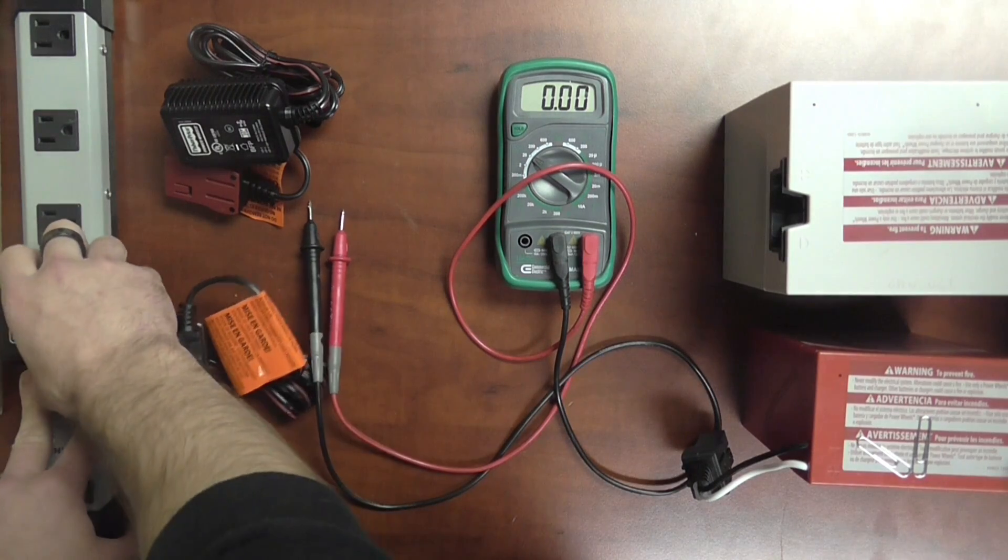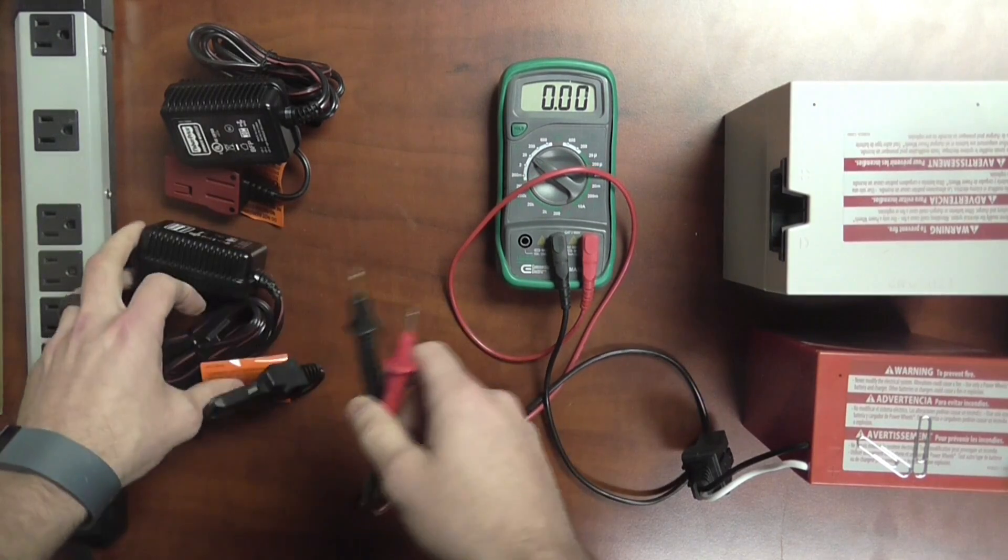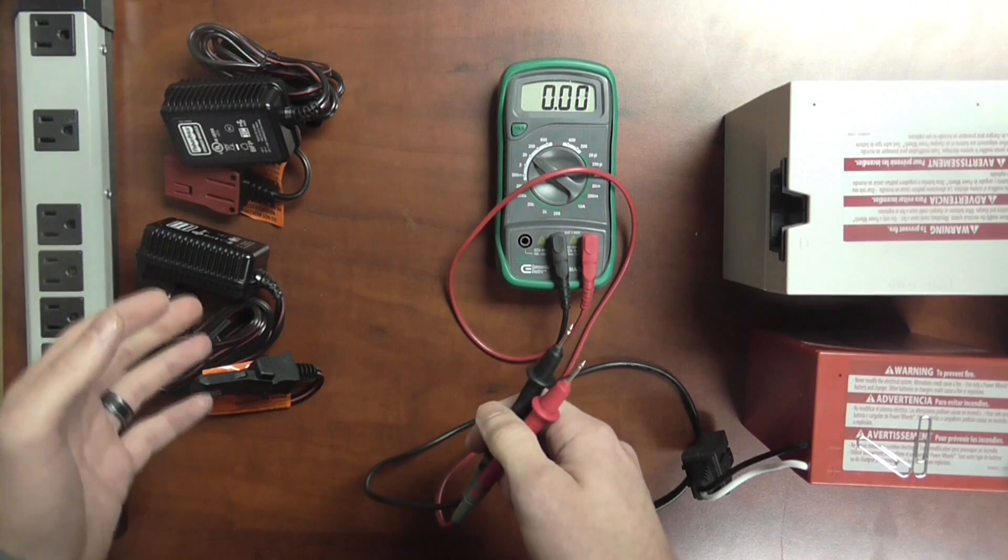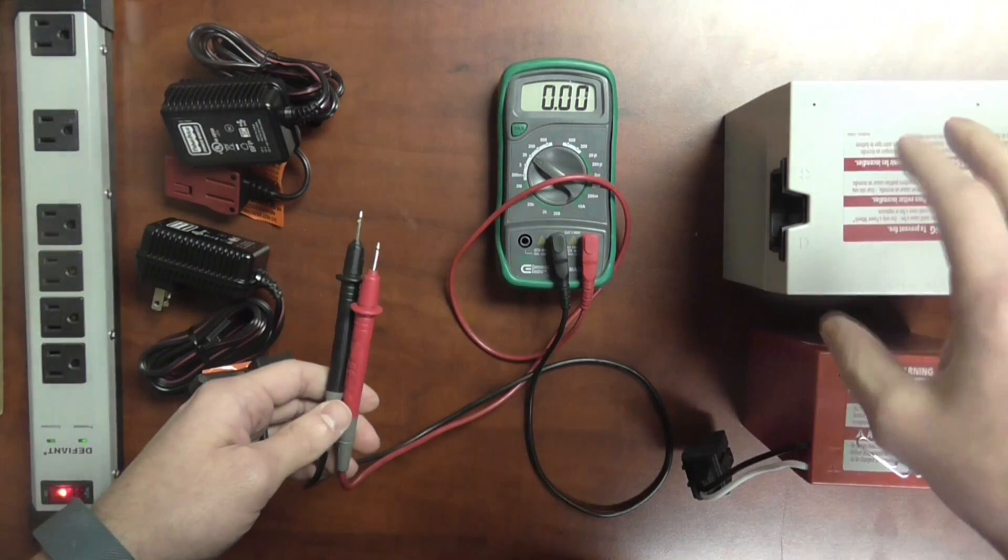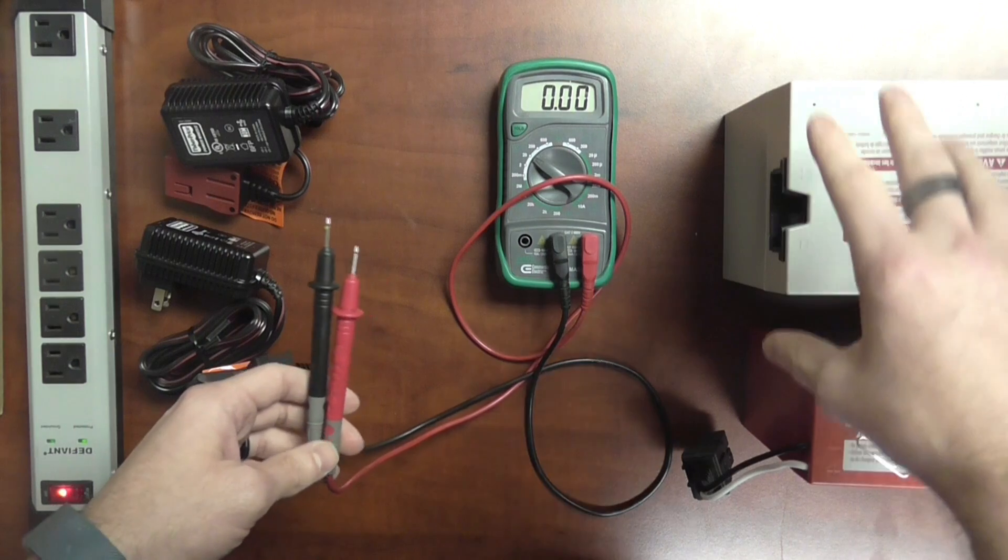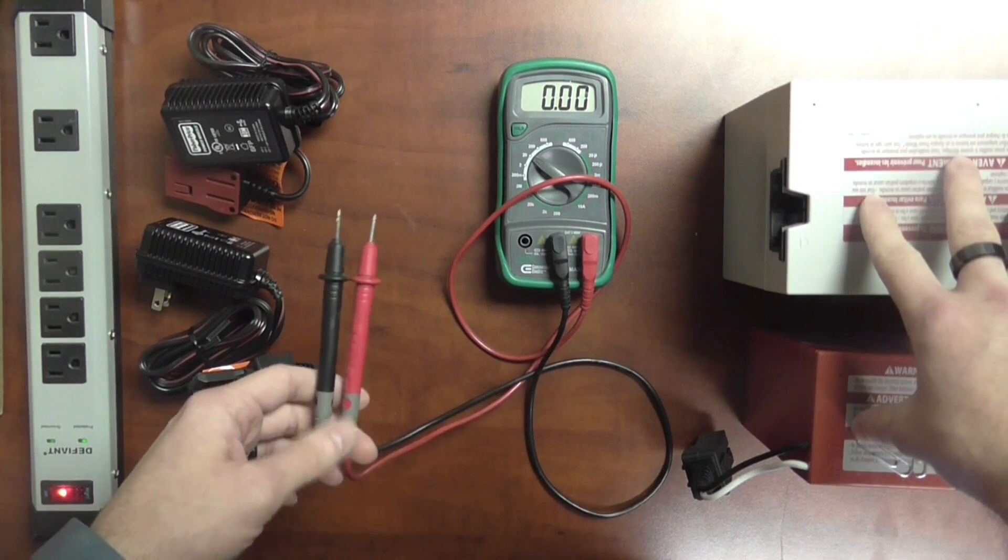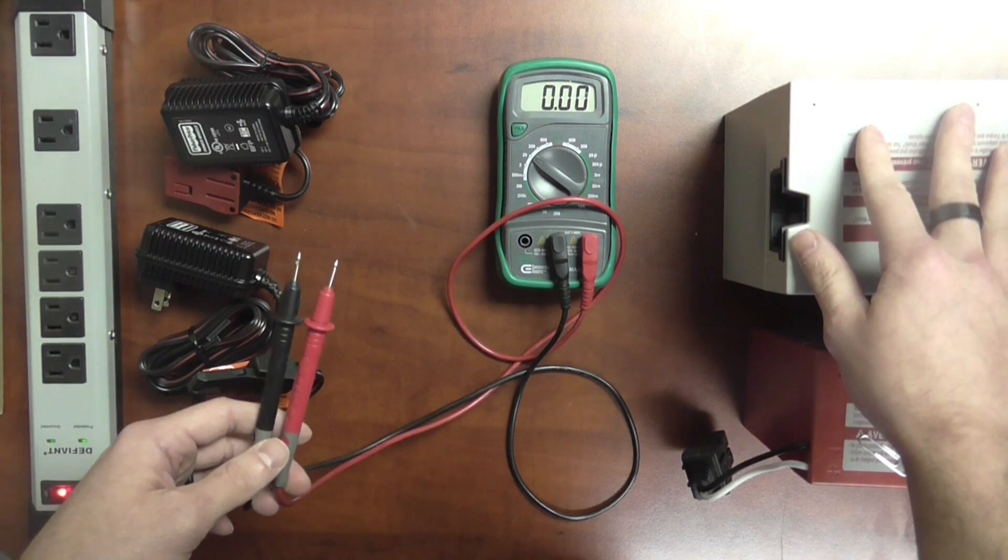So now that we've eliminated our chargers as a potential issue, next it's time to take a look at the batteries. The chargers themselves are what's called dumb chargers. They're going to try and charge the battery no matter what. However, if the battery itself is below a specific voltage threshold the charger will just kind of sit in limbo. It's not able to put any charge into the batteries themselves. So what we're going to do now is test the voltage of the batteries to see where they're at.